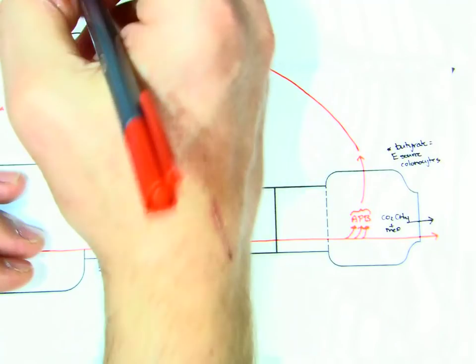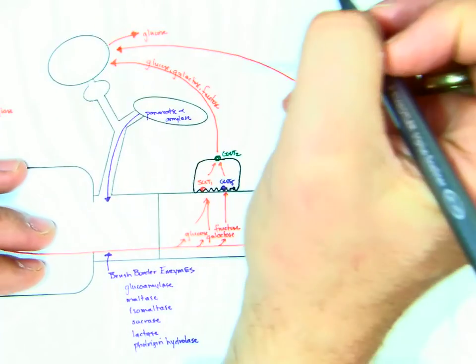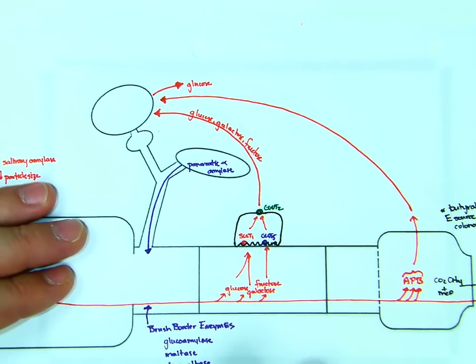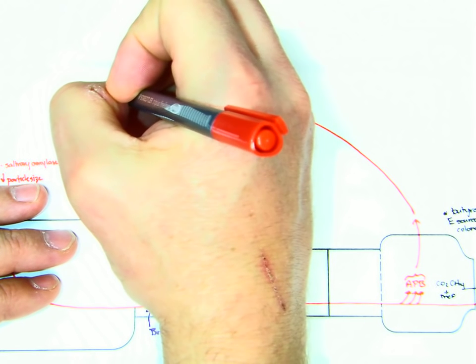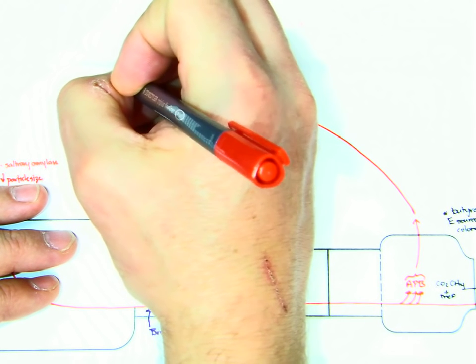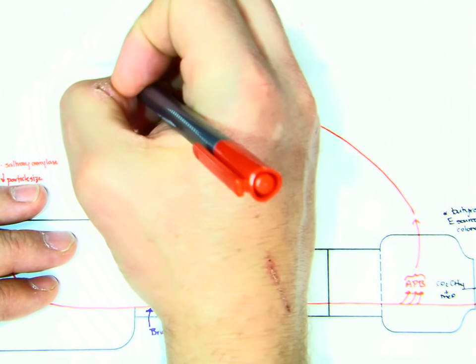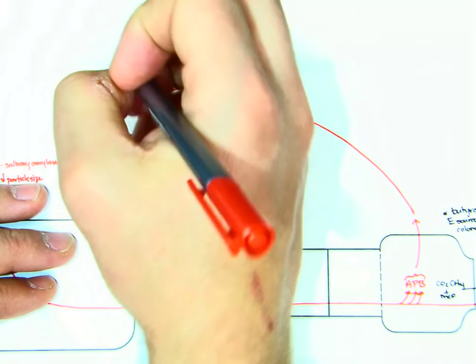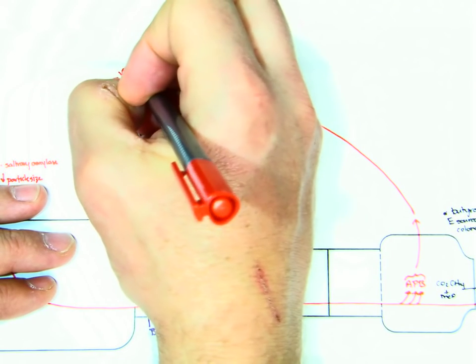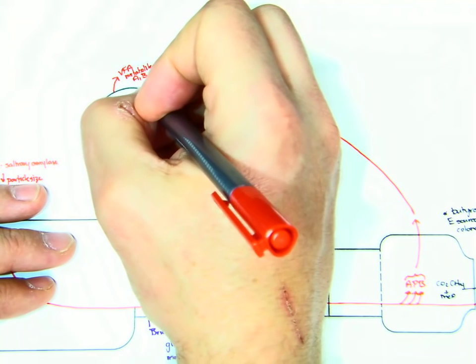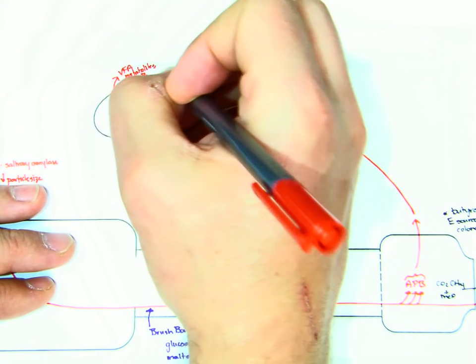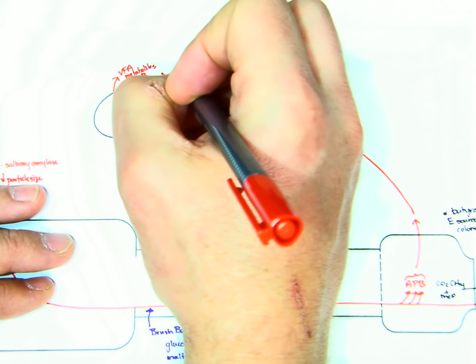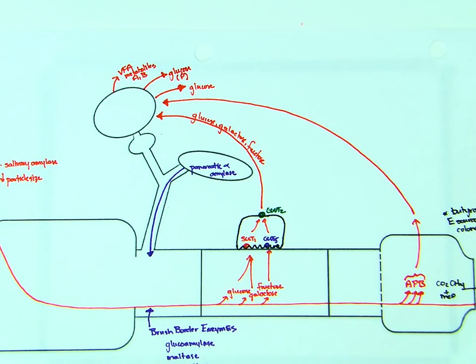And from that, the liver is going to release a couple different things. The first thing it's going to release would be VFA metabolites. We're not going to really worry about what those are called, but this is from acetate and butyrate. And it's also going to release glucose from propionate. Because as we said, propionate is glucogenic, so the liver can use propionate to synthesize glucose.